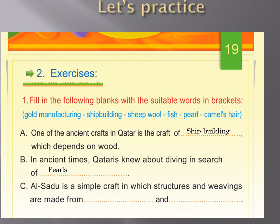In ancient times, Qatar is known for diving in search of pearls. Now the last one: al-sadu is a simple craft in which structures and weavings are made from sheep wool — very good — and camel's hair. I want you to write this neatly in your books, and when you come to class I will correct it.